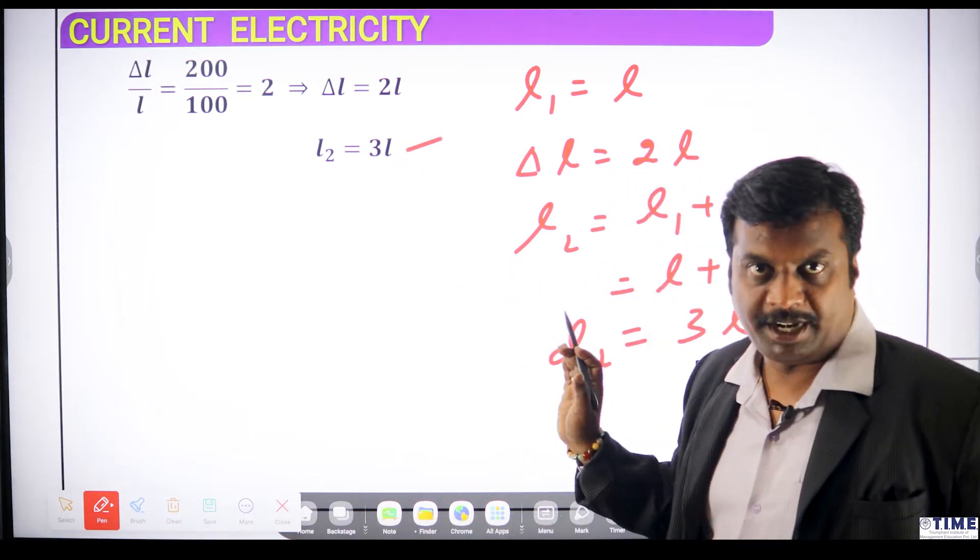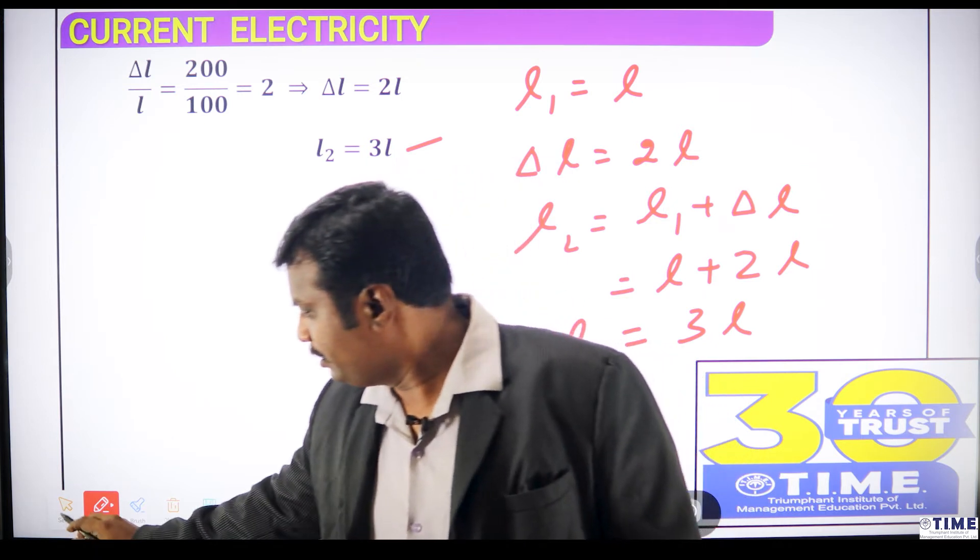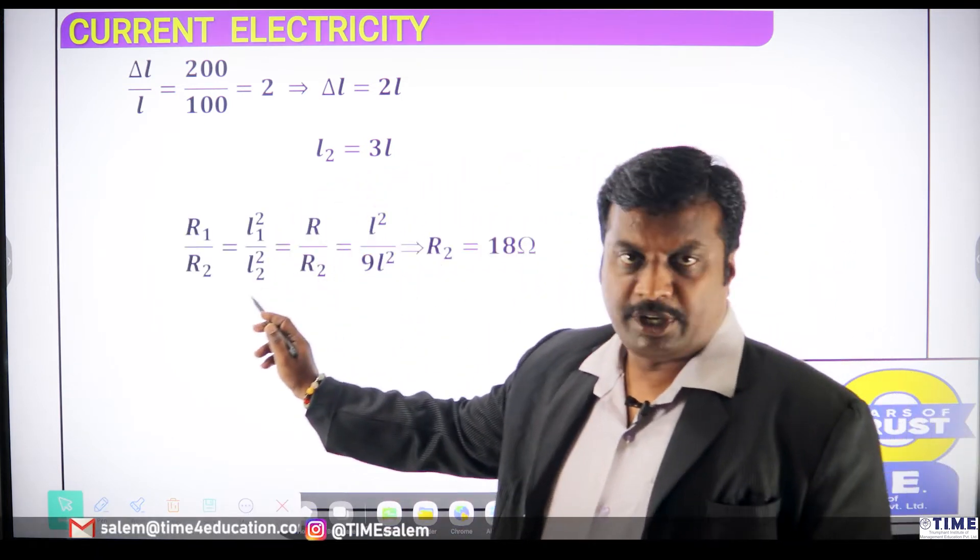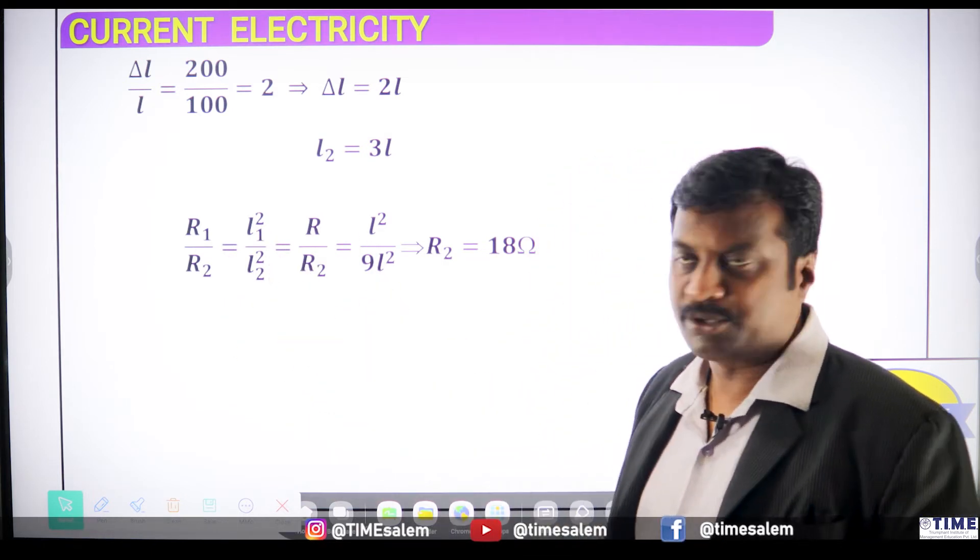This is how it has come. R is proportional to L square. R1 by R2 is L1 square by L2 square.